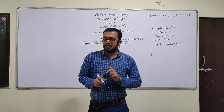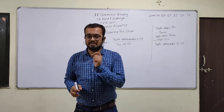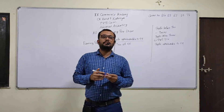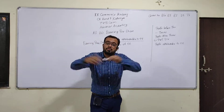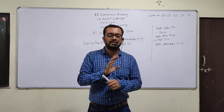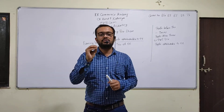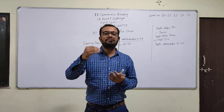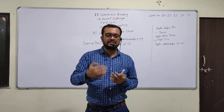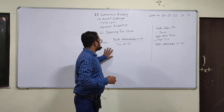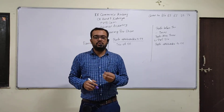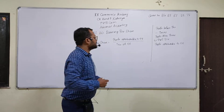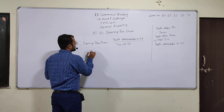EPS means Earning Per Share and DPS means Dividend Per Share. Normally, the company may earn a profit but not distribute all of it. There is an additional important point in this topic — that is diluted EPS.